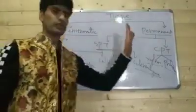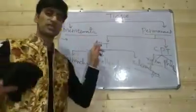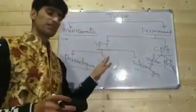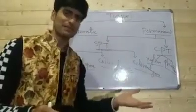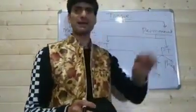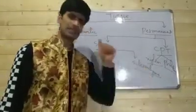Tissues are of two main categories: meristematic tissues and permanent tissues. Meristematic tissues retain the power of cell division; permanent tissues have lost the power of cell division. Simple permanent tissues are composed of similar types of cells. Complex permanent tissues have different types of cells. Parenchyma, collenchyma, and sclerenchyma are the three sub-types of simple permanent tissue. Xylem and phloem are the two sub-types of complex permanent tissue.